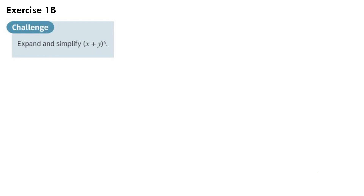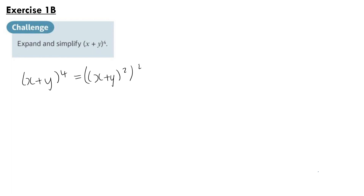Our first question is from Exercise 1b and it says: expand and simplify (x + y) to the power of 4. So we could write out (x + y) four times and do the expansion one by one, but I think an easier way to do this is to spot that (x + y)⁴ is equal to (x + y)² all squared, and that means you only have to expand brackets twice, which is quite nice.